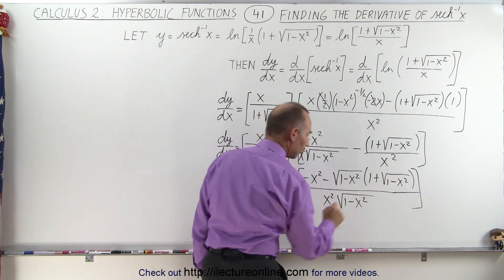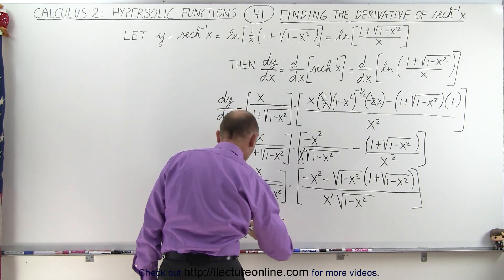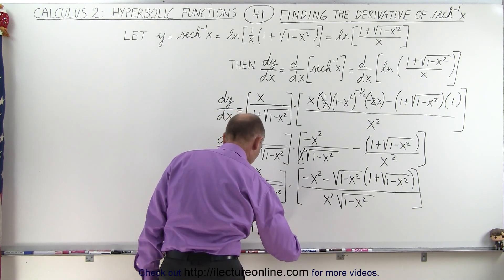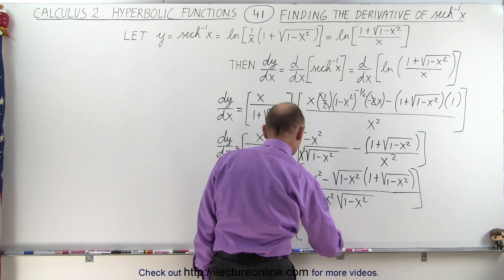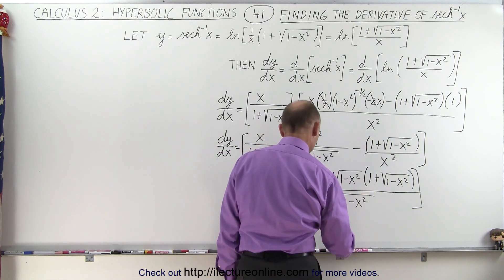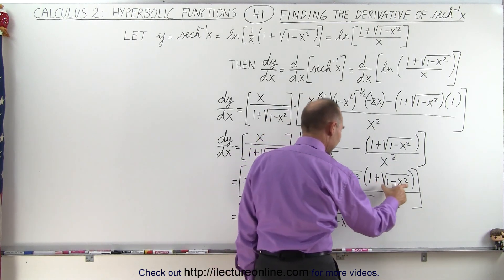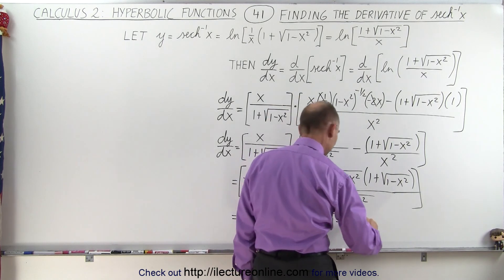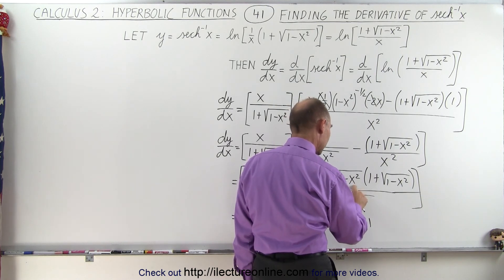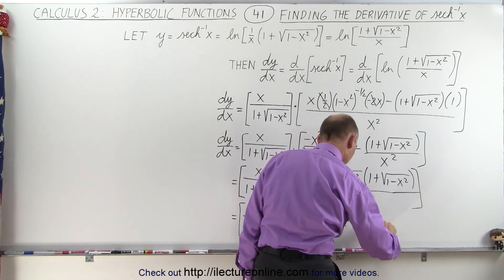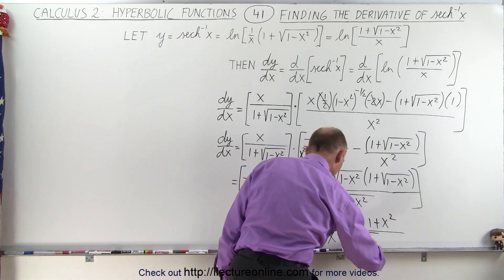Multiplying through, we have x divided by 1 plus the square root of 1 minus x squared, times: in the numerator, minus x squared, minus the square root of 1 minus x squared, and — since there's a negative in front — minus 1 and plus x squared, because this times this gives minus x squared, but with the negative it becomes plus x squared, all divided by x squared times the square root of 1 minus x squared.